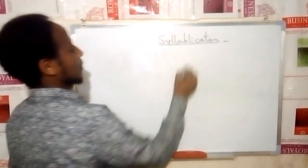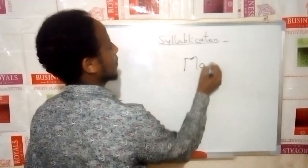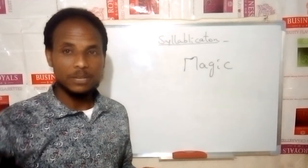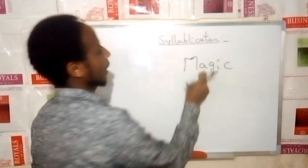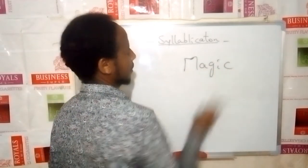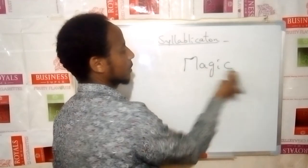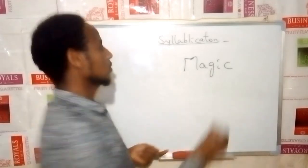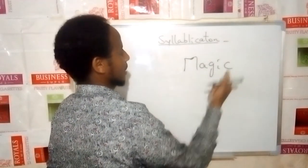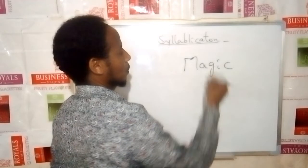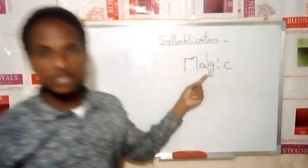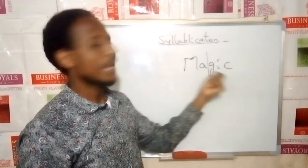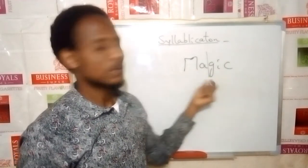Now let's look at disyllabic words. Take the word 'magic.' Let us count the vowel sounds: M-A-G-I-C — we have two vowel sounds, A and I. As a result, it is called disyllabic. The syllabification for the word 'magic' is: ma-gic.